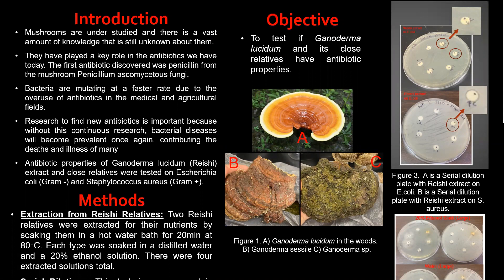The crisis we are dealing with today is bacteria mutating at a faster rate due to the overuse of antibiotics in the medical and agricultural fields. These bacteria are building up antibiotic resistance due to people not completing their medications, and agricultural fields are putting antibiotics in the feed they give their animals, which is also leading to antibiotic resistance.